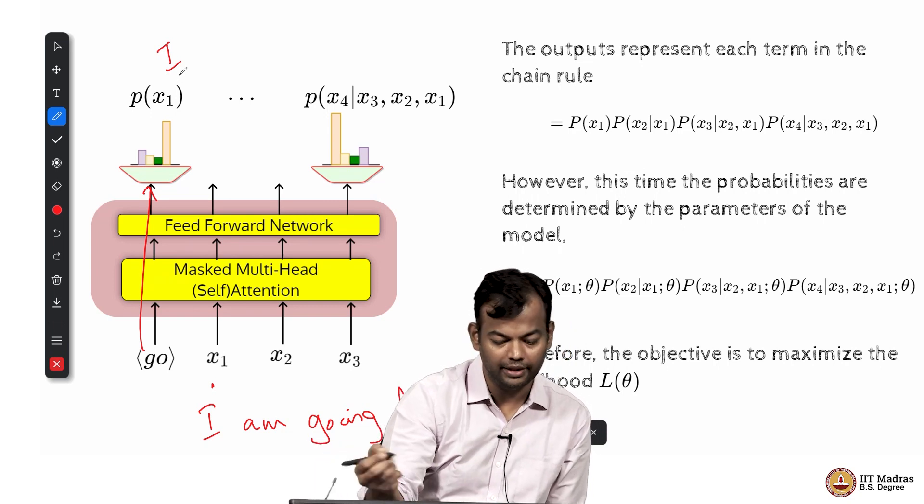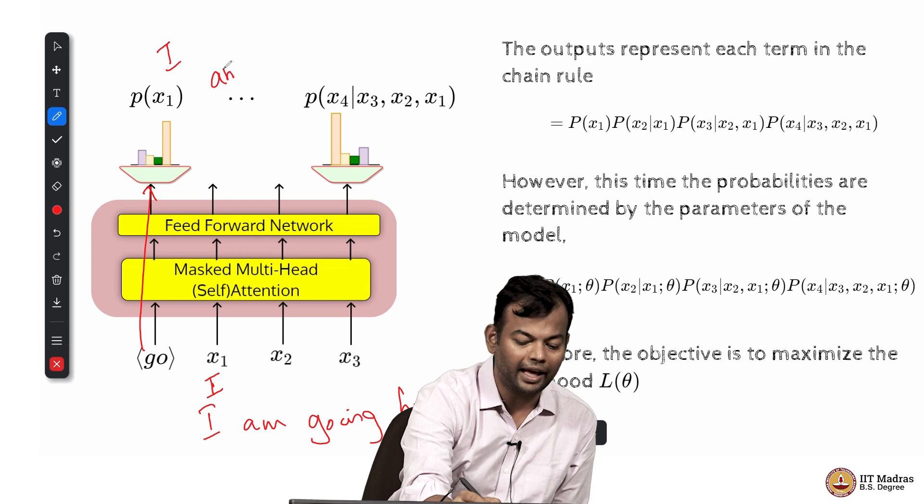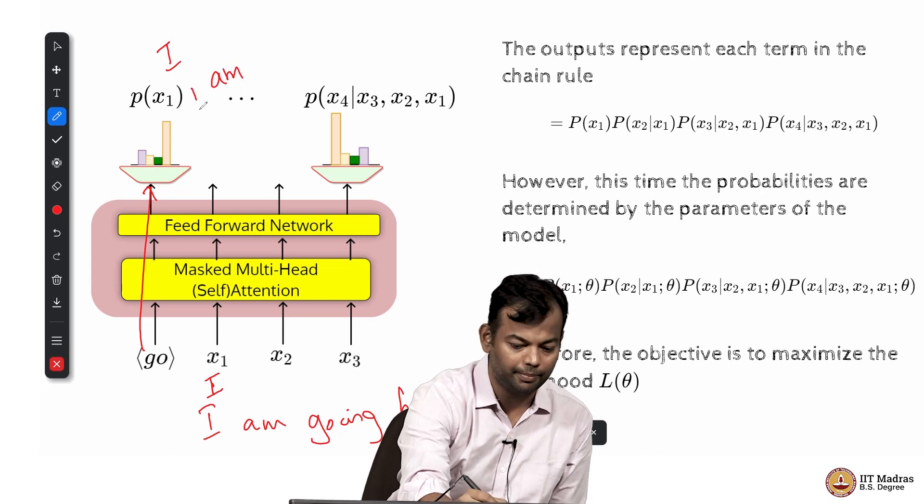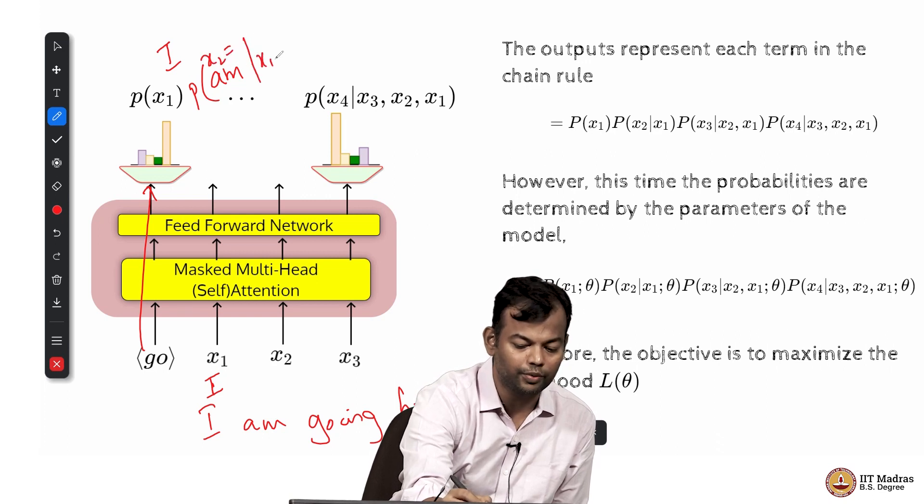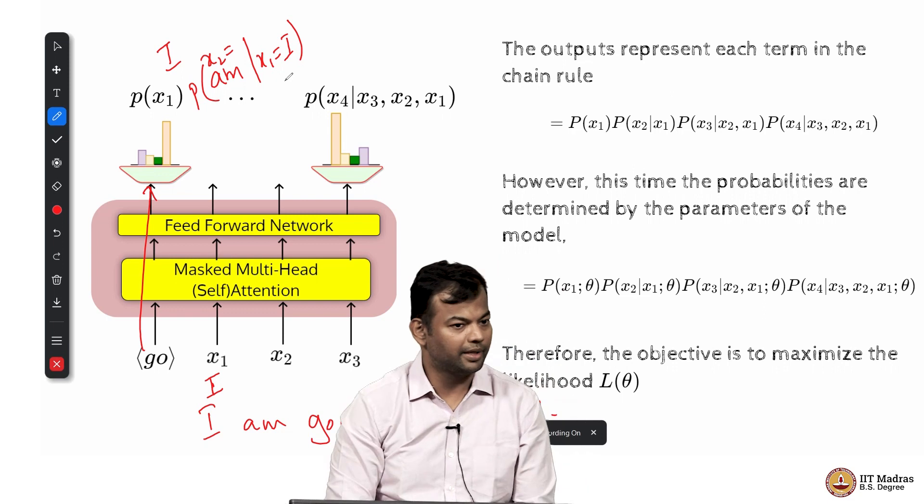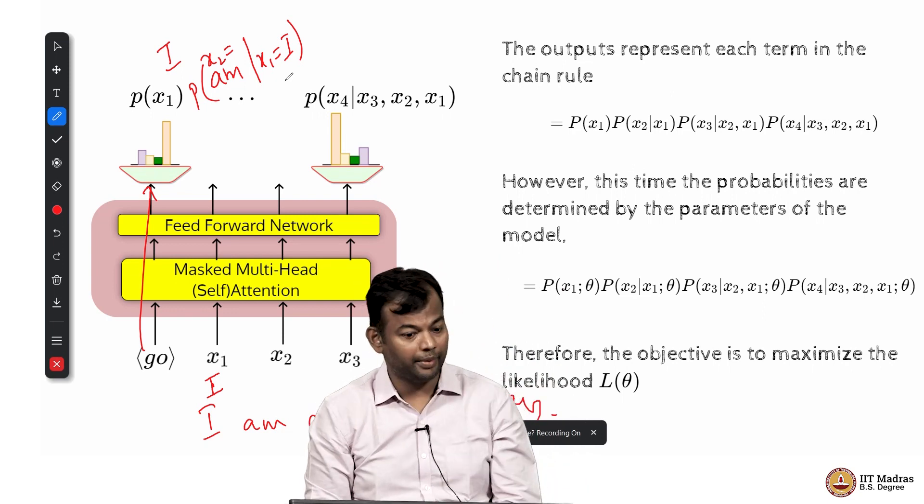So this is what maximizing the likelihood means. So that I have to adjust the parameters theta of the model, so that this guy gets the maximum probability. And this is an iterative back propagation algorithm that we have seen before in the first course.